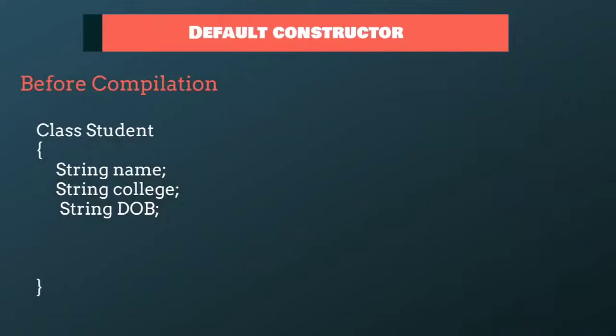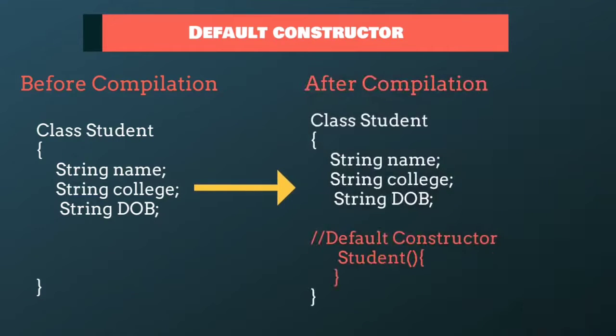There are three types of constructor. First is a default constructor. This constructor is created by Java compiler. If we don't create any constructor, then Java compiler will automatically create a constructor for us at the compile time.